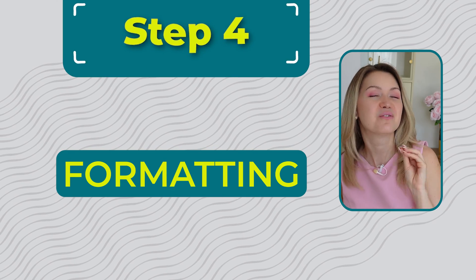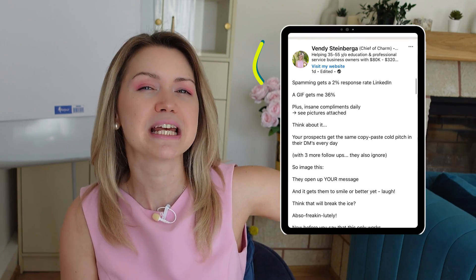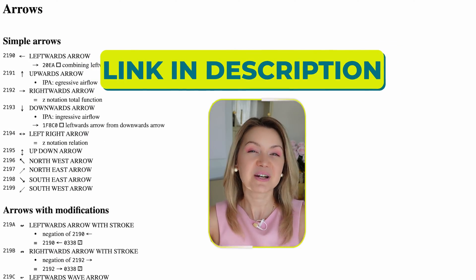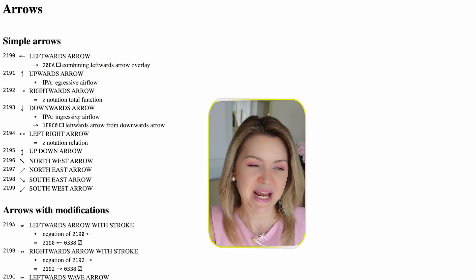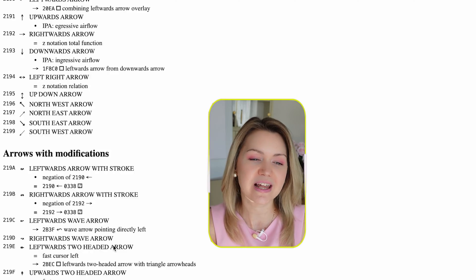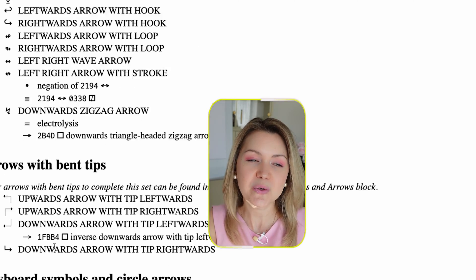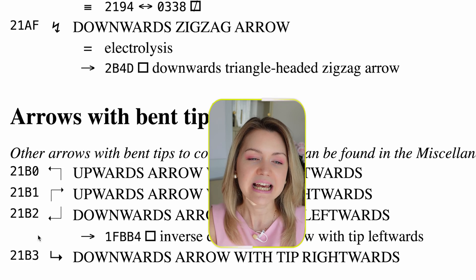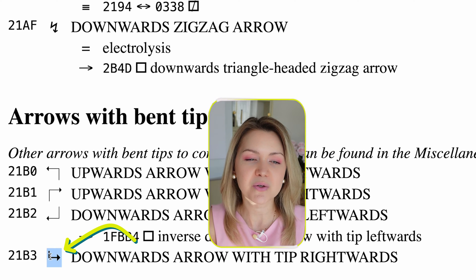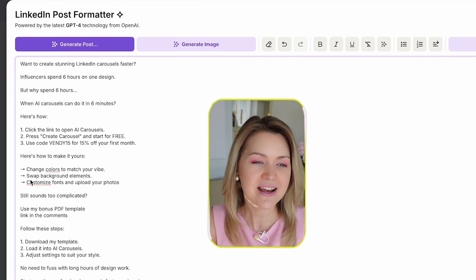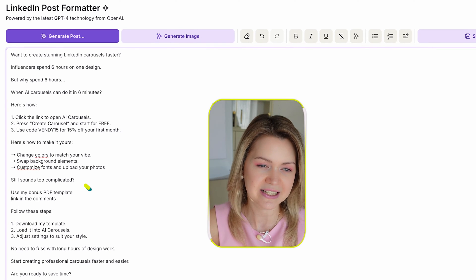Step number four: formatting. If you've been noticing people using all these arrows in their posts but aren't sure where to find them, let me share the secret. In the description below you'll find a page with unicodes you can copy and paste and use in your own content. For example, these arrows are used a lot — I'm just going to copy one here and go back to AI Carousels and paste it in.